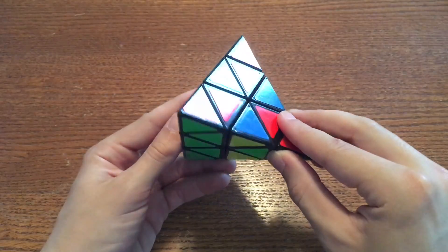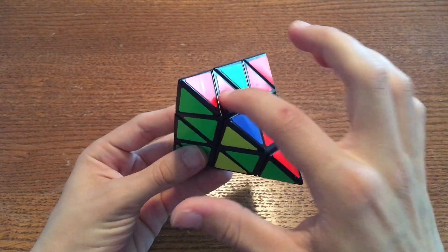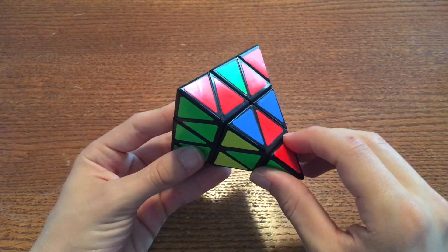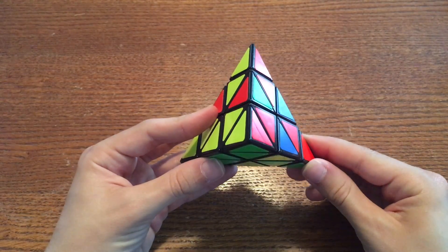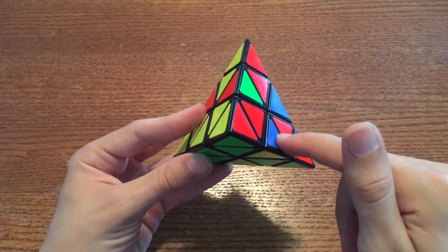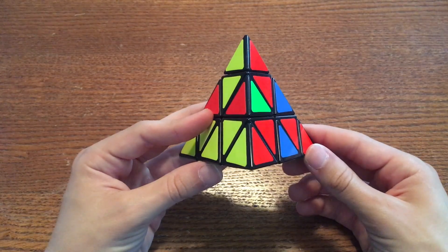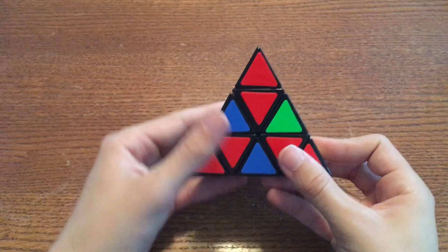If we look over here, we see that this edge is surrounded by red and green pieces. So we know that this is the correct destination. Now you need to hold the puzzle so that both the edge you're trying to move and the destination are on the top two spots. So we would hold the puzzle like this.